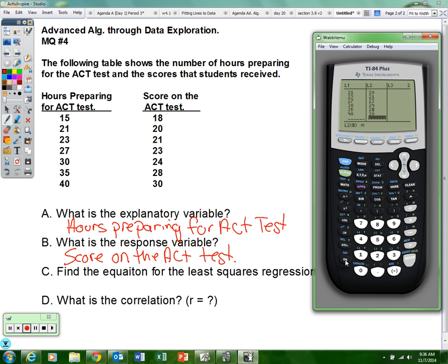Stat number one, type the numbers in list one and list two. To save time, I've already typed those numbers in. So the explanatory goes in list one and the response goes in list two.